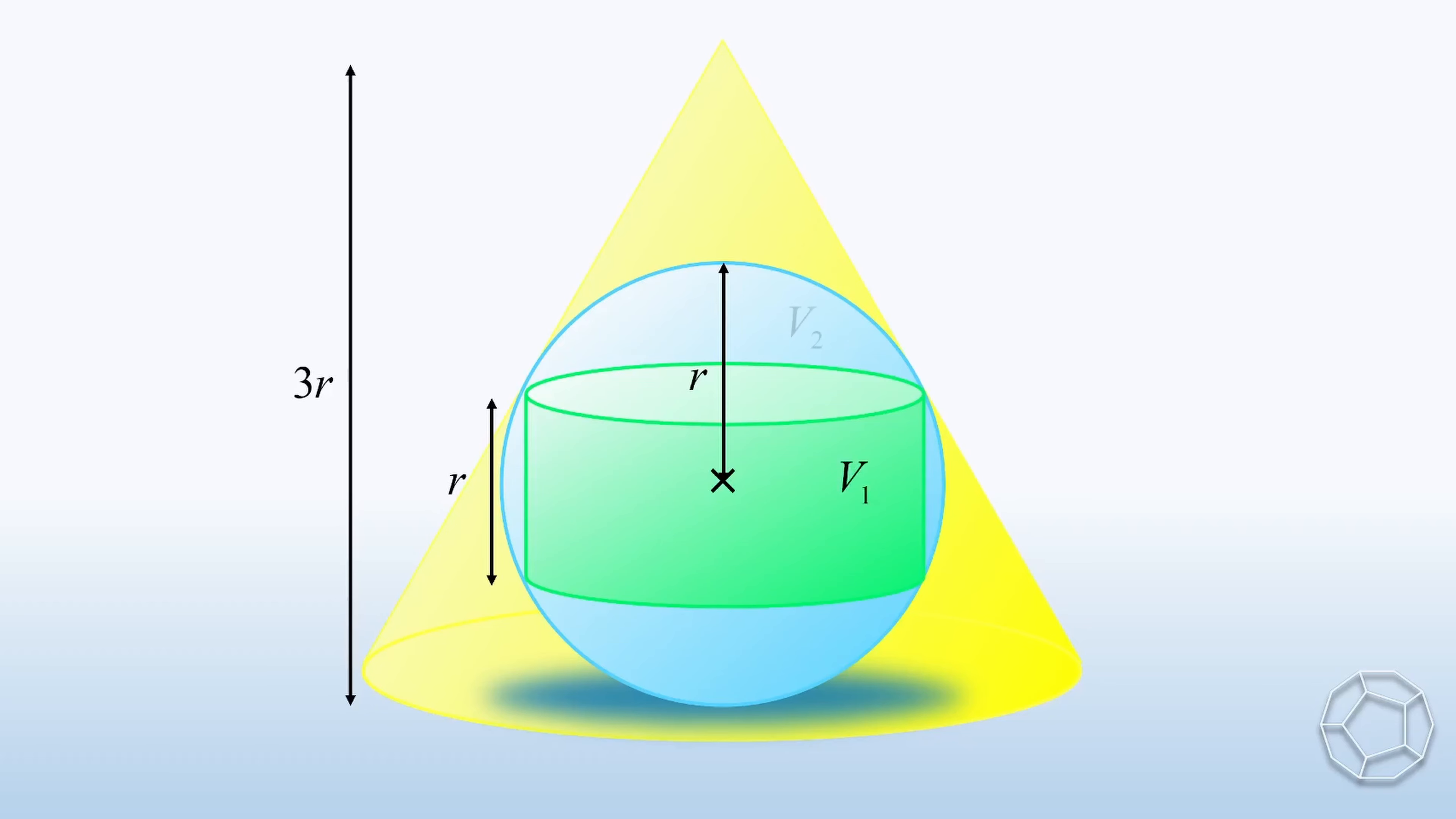Suppose v1, v2, and v3 are the volumes of the cylinder, the sphere, and the cone respectively. Find the volume ratio.